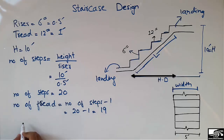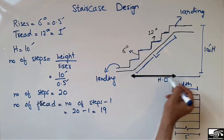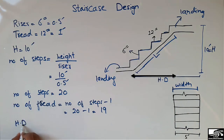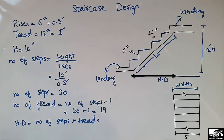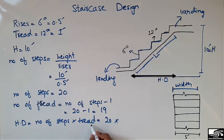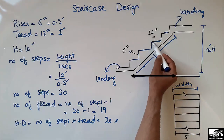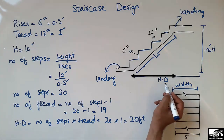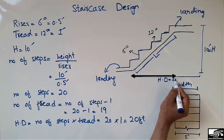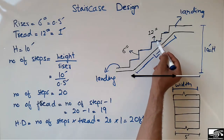Now, how to find the horizontal distance — it can be found by multiplying the number of steps by the tread length. The number of steps is 20 and the tread is 12 inches, which converts to 1 foot. So the total horizontal distance is 20 feet, given a tread of 12 inches.